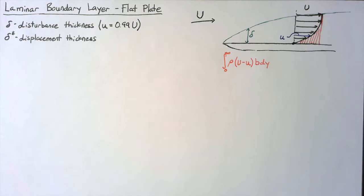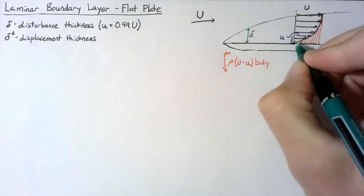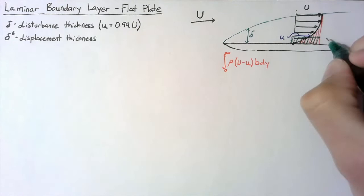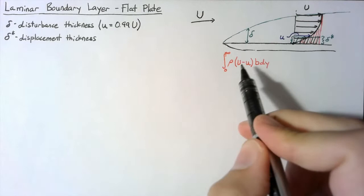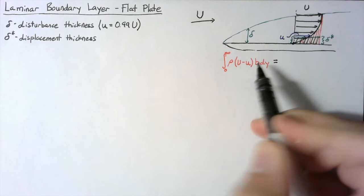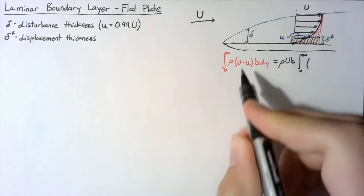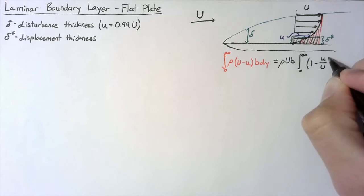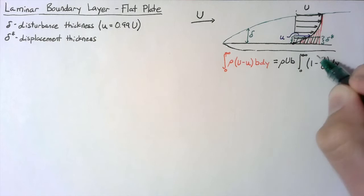Our goal here is to calculate some distance from the surface which would create an equal area if the entire thing were filled in. So this distance is our delta star. We're going to take this total mass deficit and divide out our constants — rho, u, and b — and we're left with an integral from zero to infinity of one minus our local velocity divided by our far field velocity, all multiplied by dy. The end result is that this entire integral is exactly our displacement thickness.